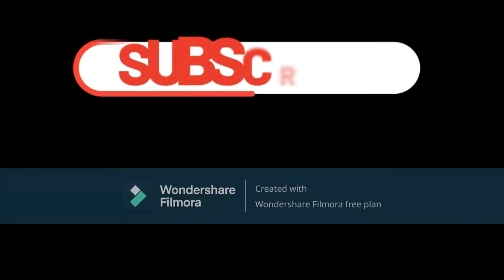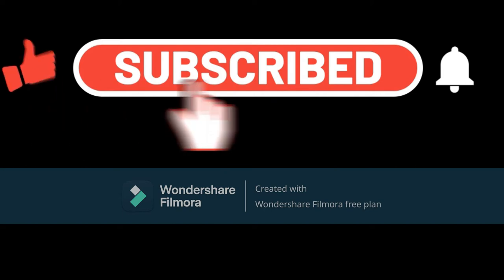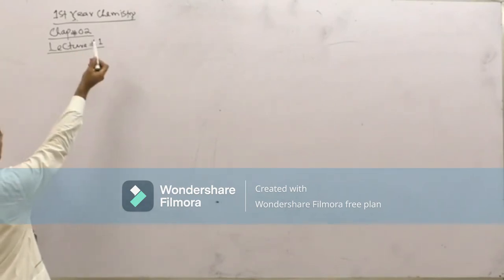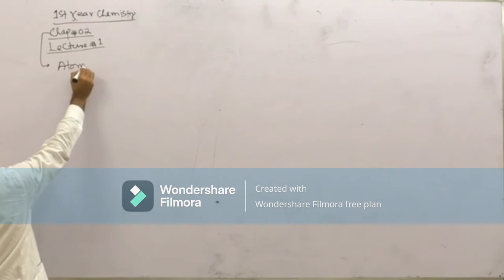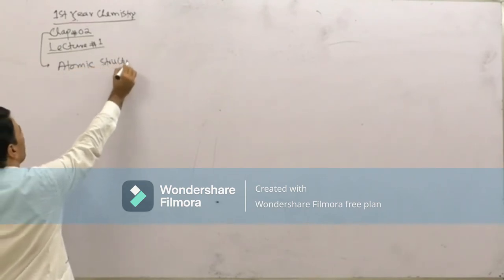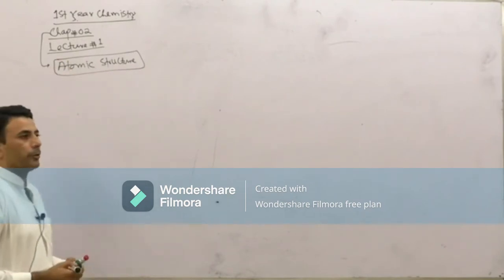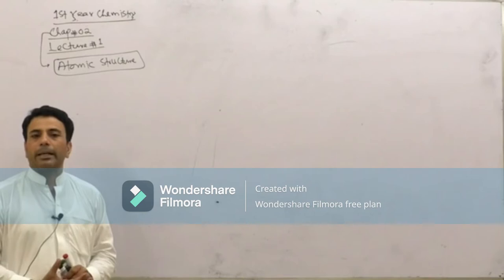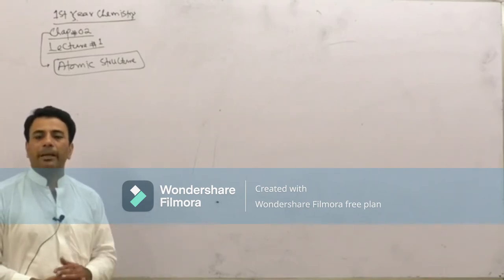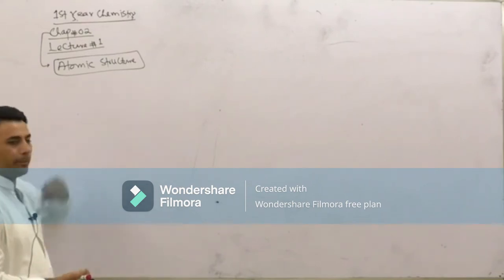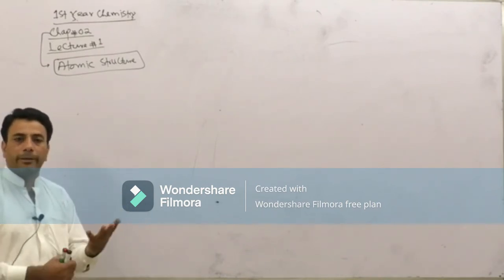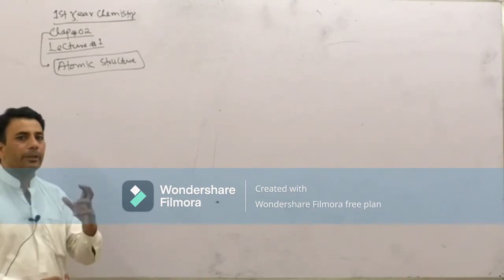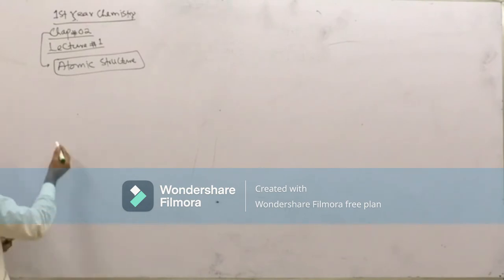Assalamu alaikum. Today we are starting first year chemistry, chapter number 2, lecture number 1. The title is Atomic Structure. When discussing chemistry, if you have to learn the right focus — especially chemical bonding — you have to understand this chapter, especially the last topics: quantum numbers, Bohr's atomic model, and electronic configuration.